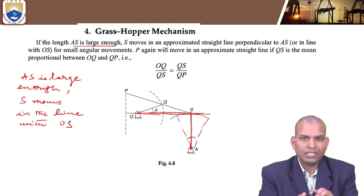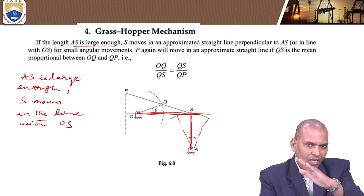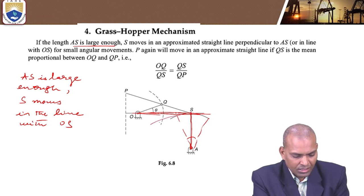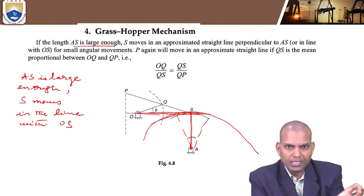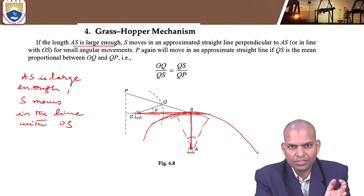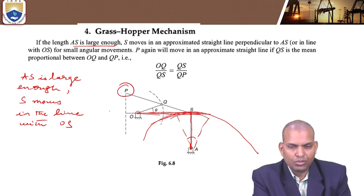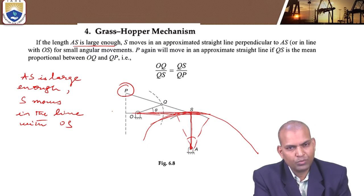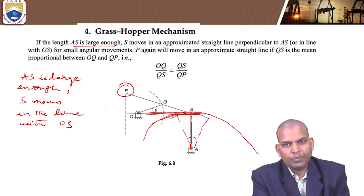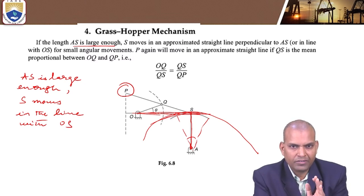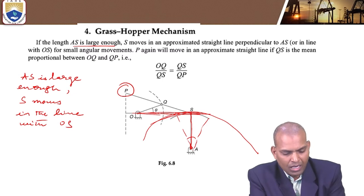If the length of AS is large enough, the point S moves in an approximate straight line perpendicular to AS — or in line with OS. It is not an exact straight line, but an approximate straight line. For this approximation to hold, the angular motion of AS must be small. If it is a large angular motion, the path moves with complete curvature, which would affect the locus of point P.